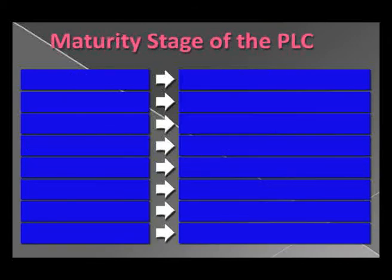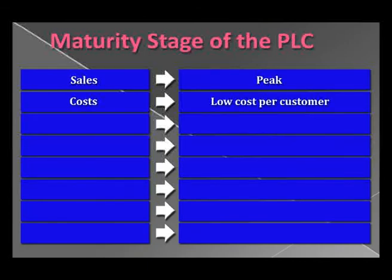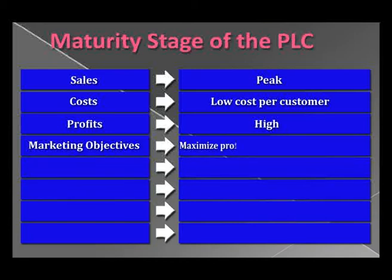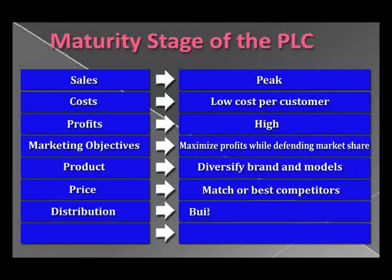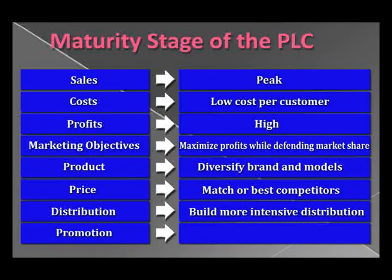The third stage is the maturity stage of the PLC. Sales are at peak, cost per customer is low, and profit is high. The marketing objective is to maximize profit while defending market share. The product diversifies into brands and models. Prices match the best competitor. Distribution is intensive and promotion is increased to encourage brand switching.